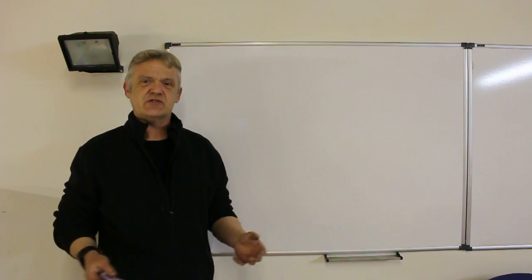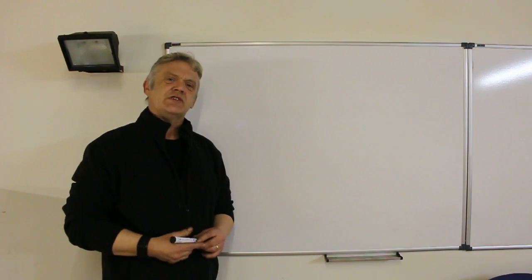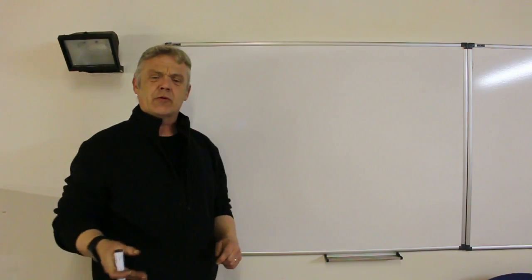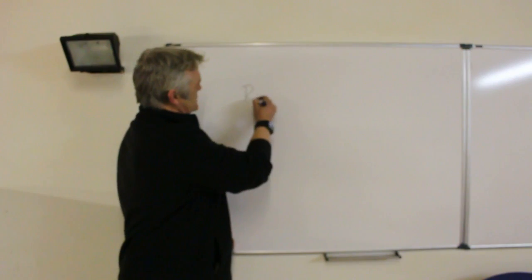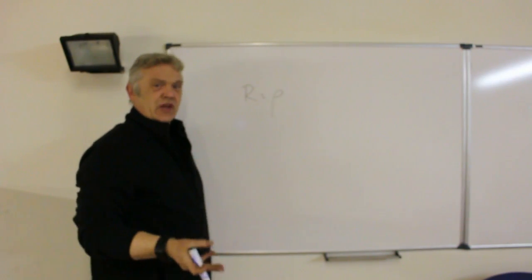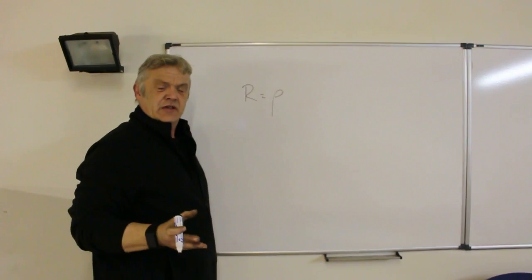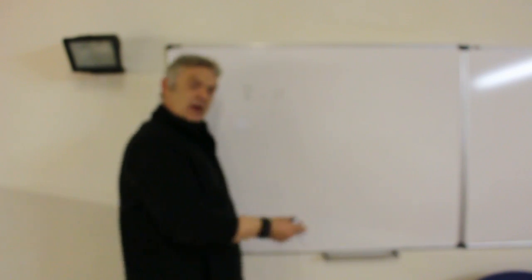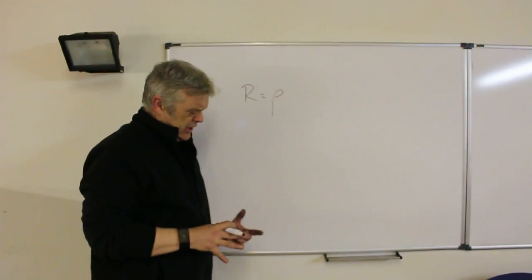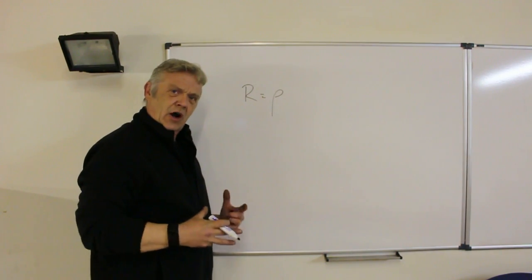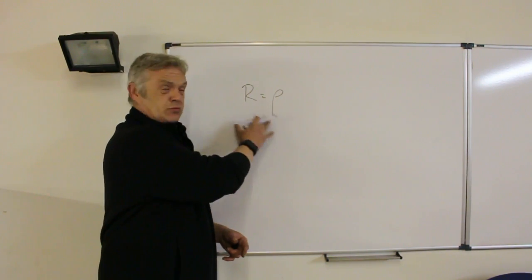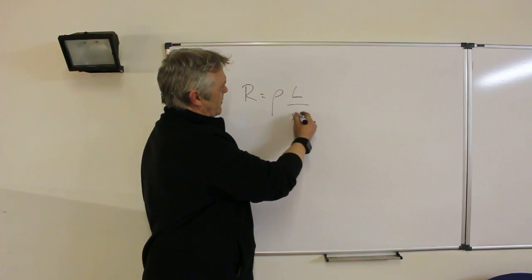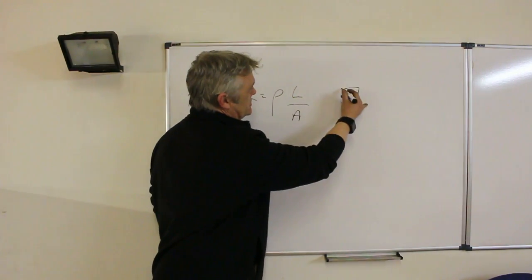The first question is: what is sheet resistance? To think about sheet resistance we need to understand resistance per se. Resistance is a property of a material dependent on its geometry. Resistance equals rho — the resistivity — which is an intrinsic property of all materials. When using an actual material, you have a lump of a certain size, and that affects the resistance but not the resistivity. So resistance equals resistivity times length divided by area.